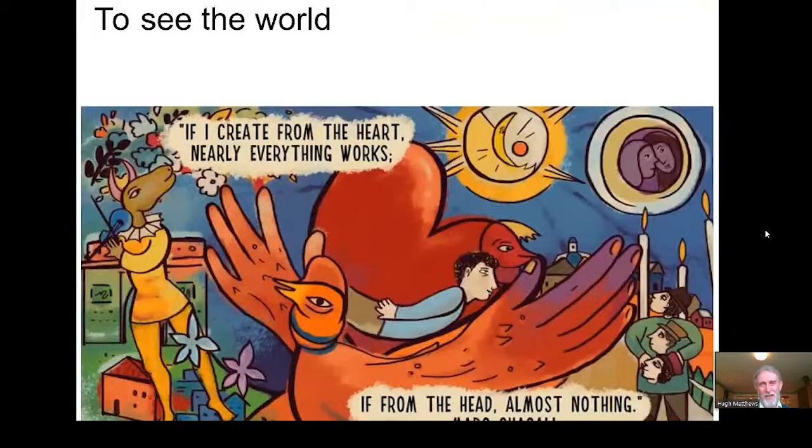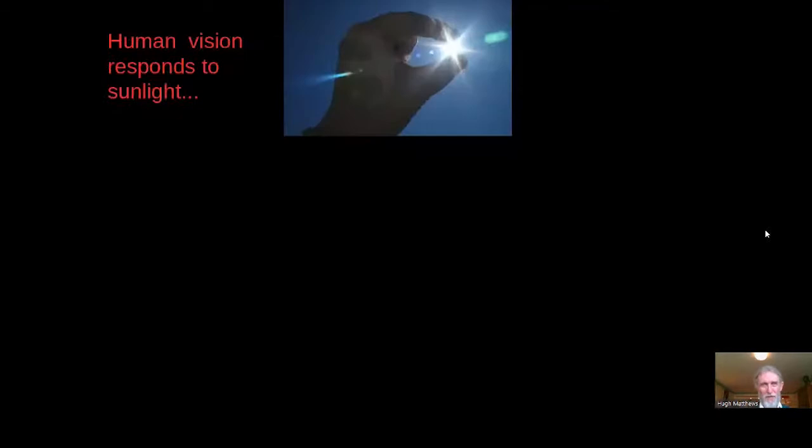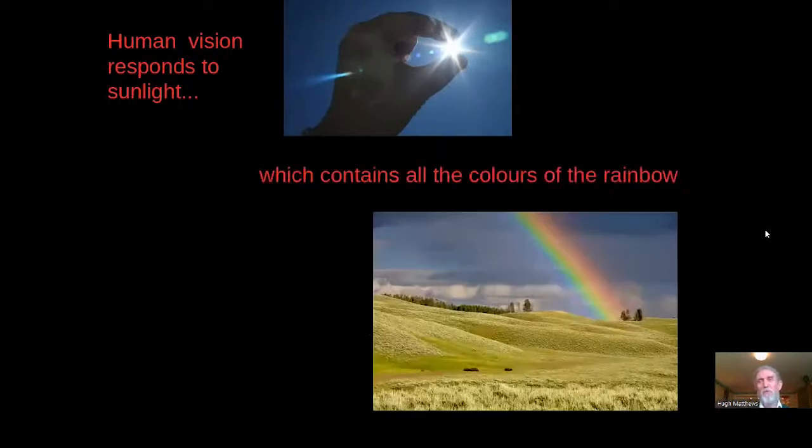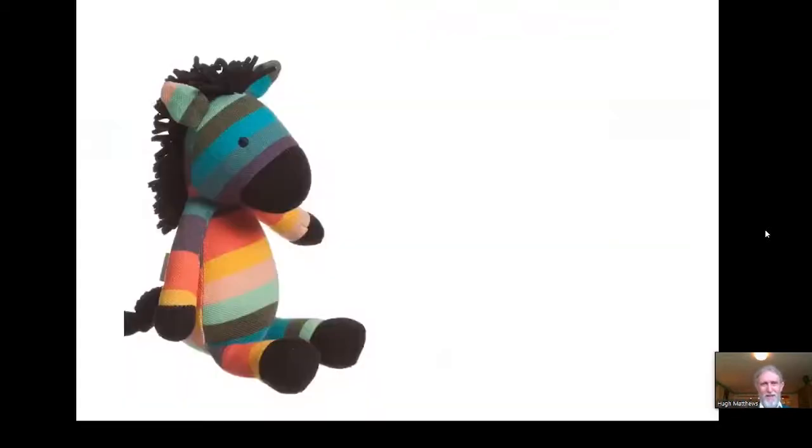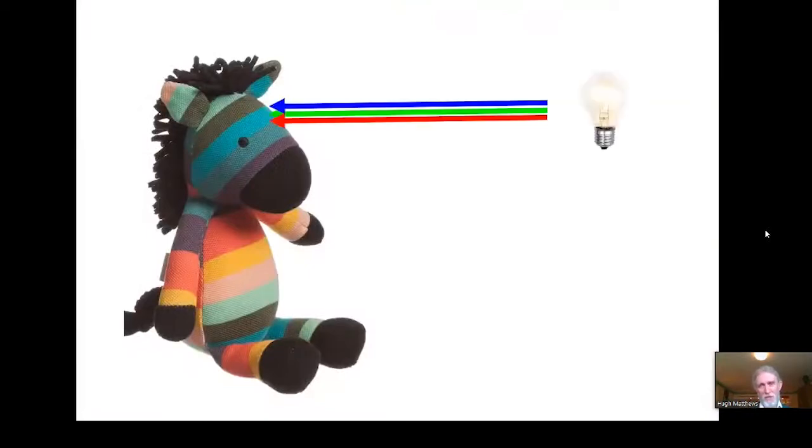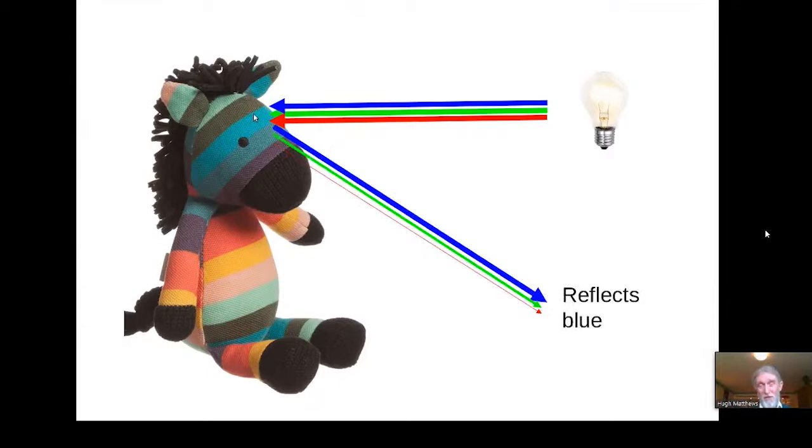Now to see the world in colour, we use our less sensitive cones. And human vision responds to sunlight, which contains all the colours of the rainbow. We've evolved to respond to this range of wavelengths from blue violet at one end of the spectrum, through blue, through green, through yellow, then orange and red. And our cones have got to sample these different wavelengths to provide us with a reliable image of what we have actually seen. Let's go back to our little stripy zebra, but this time a colourful zebra, and again illuminate it from an external light source.